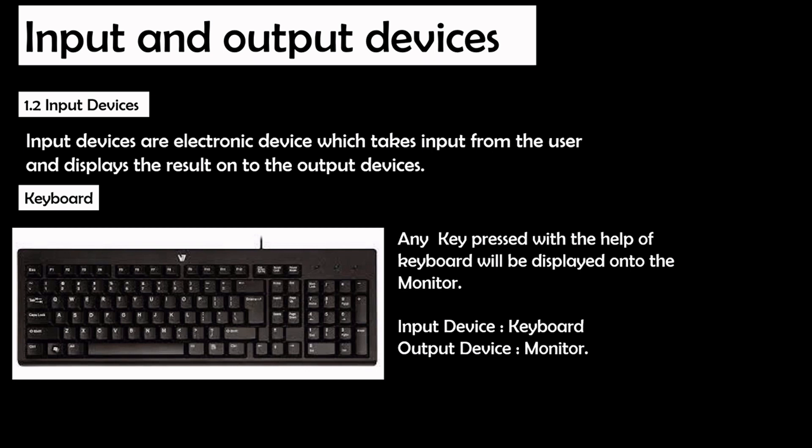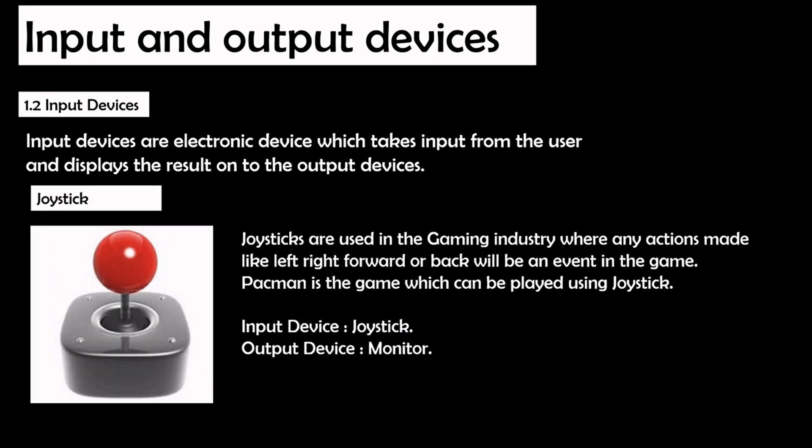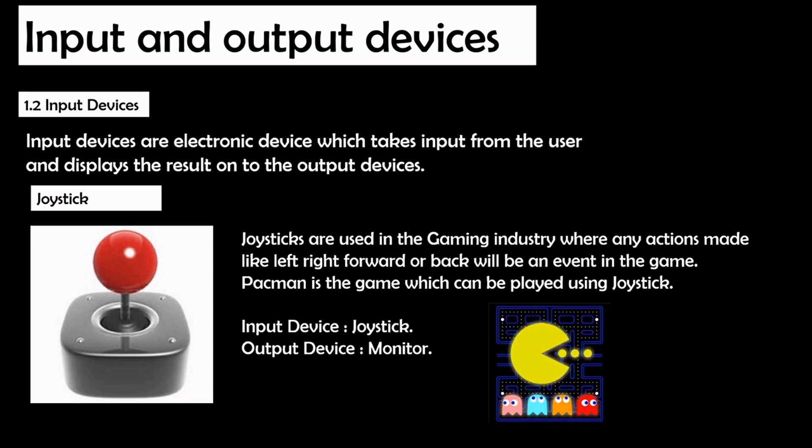A second example of an input device is a joystick, which is mainly used in the gaming industry, where we can move it in all four directions to play a game. Pac-Man is the best example of a game played using a joystick. In this case, the joystick is the input device and the monitor is the output device.